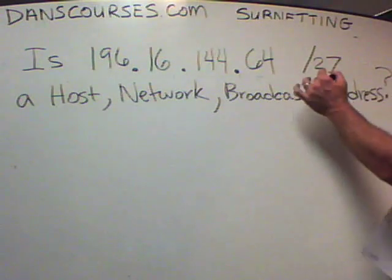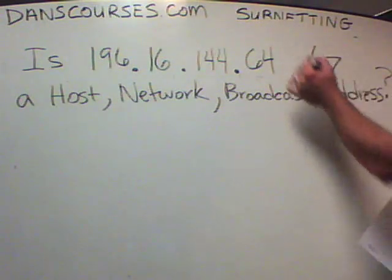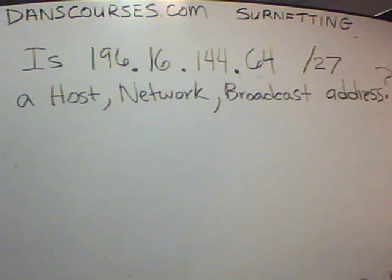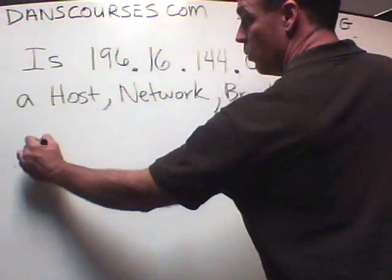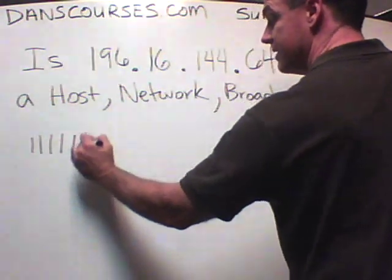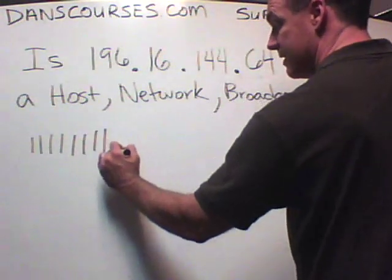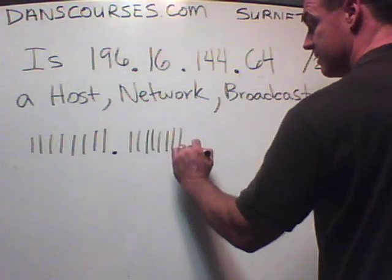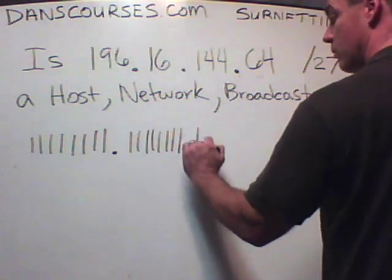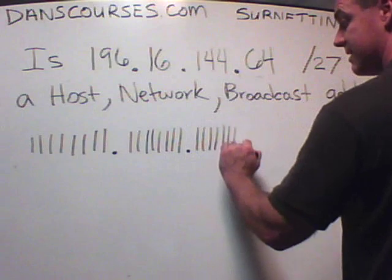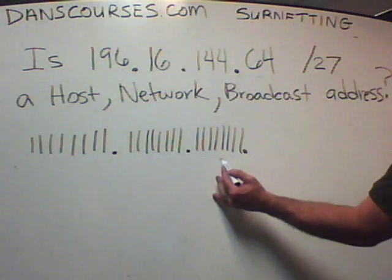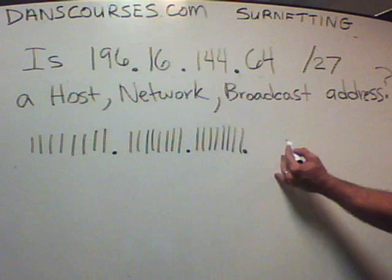First of all, the answer is in the subnet mask. So you take the subnet mask — slash 27 — and you write that out in binary. You write out the first three octets, each with eight ones, giving you 24 bits. Then in the last octet, you continue: the 25th, 26th, and 27th bits are ones, and you fill in zeros for the remaining bits.